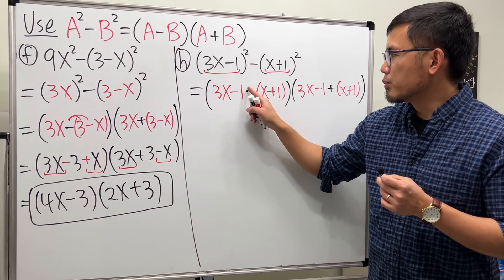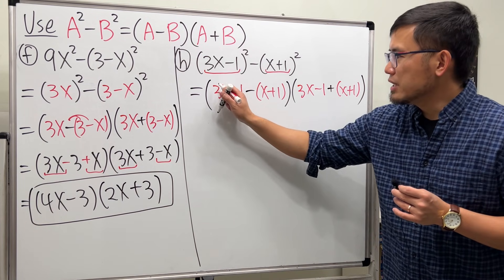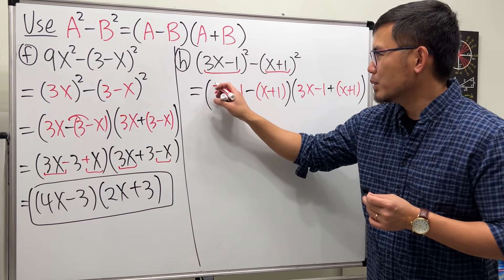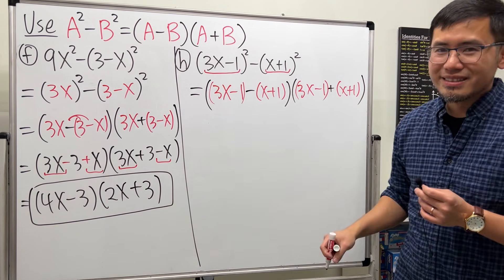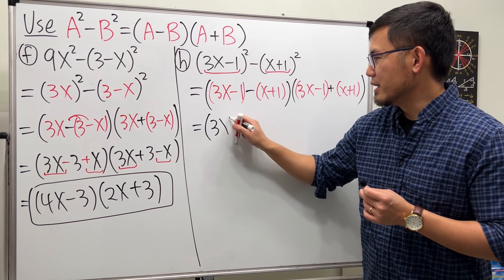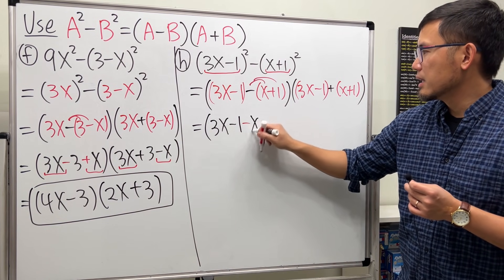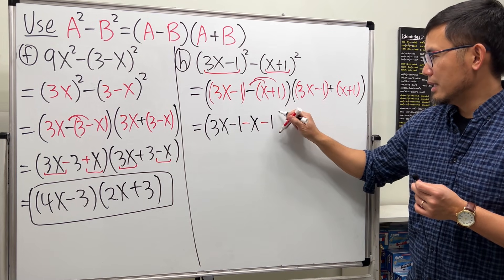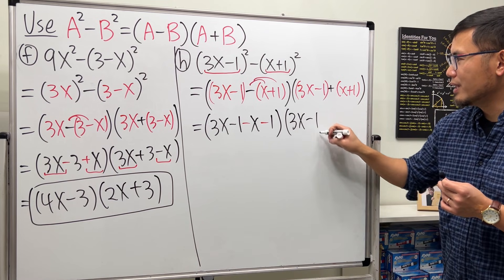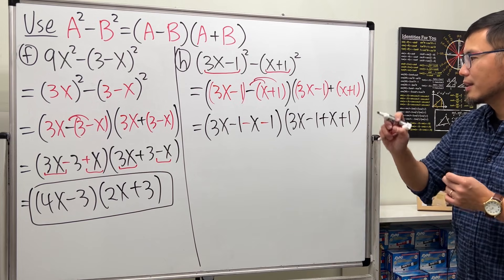And some of you guys might be wondering, do we need the first parenthesis right here? But technically yes, but also no, because if you have a parenthesis since there's nothing in front, it doesn't matter. I'll still put it down here, it doesn't matter. The first parenthesis really doesn't matter. You have 3x minus 1, distribute, we get negative x and then minus 1. And then for the second one, this parenthesis doesn't matter, 3x minus 1, distribute, just plus x plus 1.